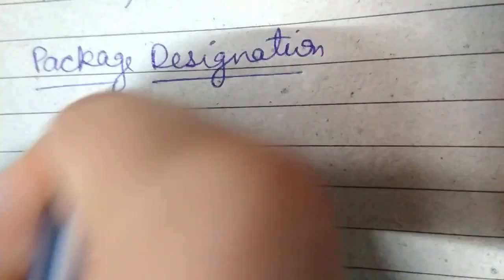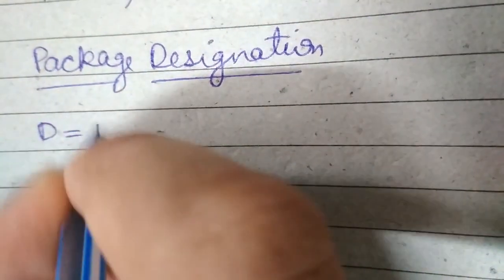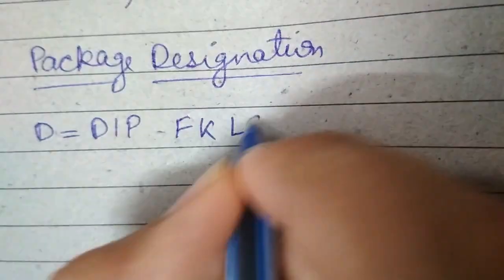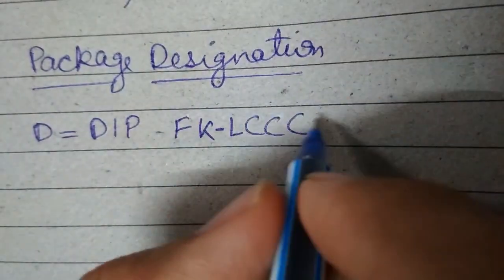For package designations, D represents Dual Inline Package, N represents Plastic Dual Inline Package, and other designations are as shown.